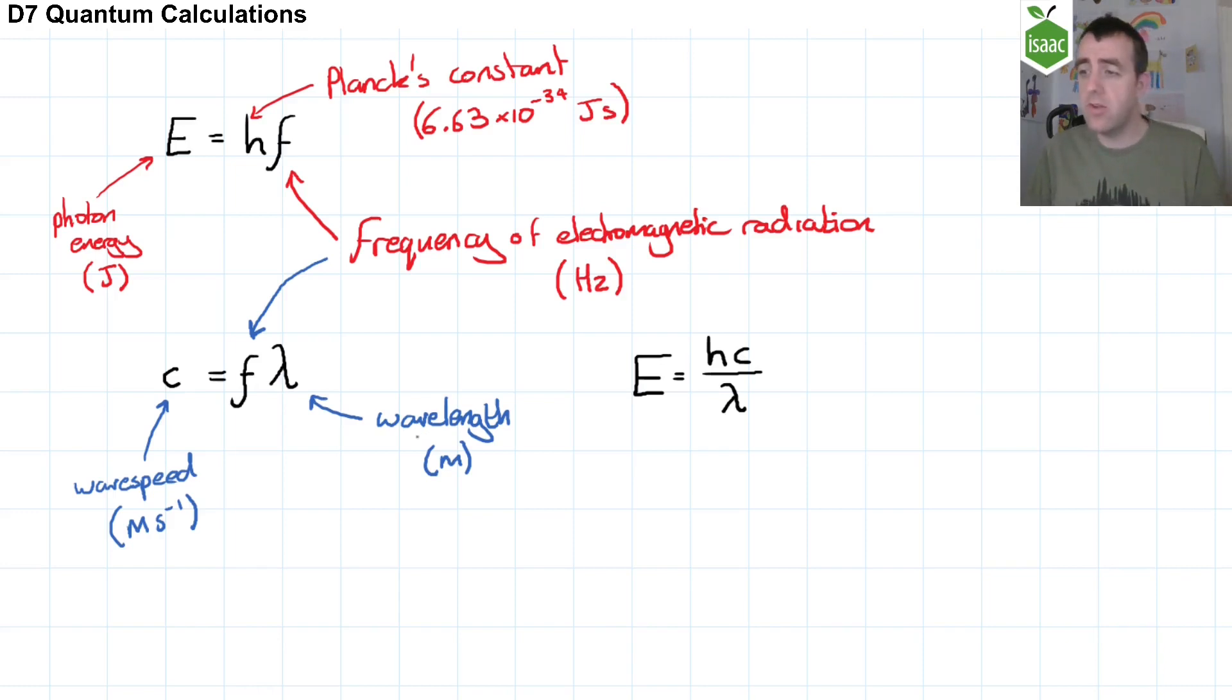Now in quantum calculations, the energy often is a very small number of joules. So very often we will use an alternative unit for energy called the electron volt. One electron volt is the energy gained by an electron as it passes across a potential difference of one volt, and it is equivalent to 1.60 times 10 to the negative 19 joules on Isaac Physics.